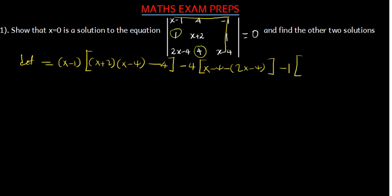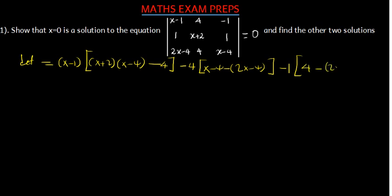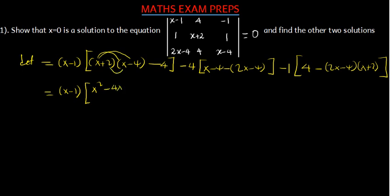So that is going to be 1 times x minus 4, which is just x minus 4. Then minus this by that, which gives us 2x minus 4. And then we get the next number here — don't change its sign — negative 1. Remove the column and the row; the matrix which remains, find the determinant: 1 by 4 is 4, minus the product of 2x minus 4 and x plus 2.